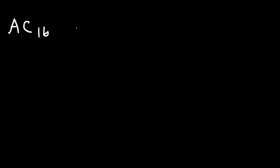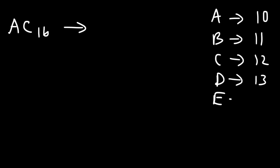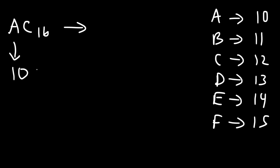AC. How can we convert that to an octal number? First, we need to change the letters A and C into numbers. A in the hexadecimal system corresponds to 10 in the decimal system. B corresponds to 11. C corresponds to 12. D corresponds to 13. E is 14, and F represents 15. So we can replace A with 10 and we can replace C with 12.